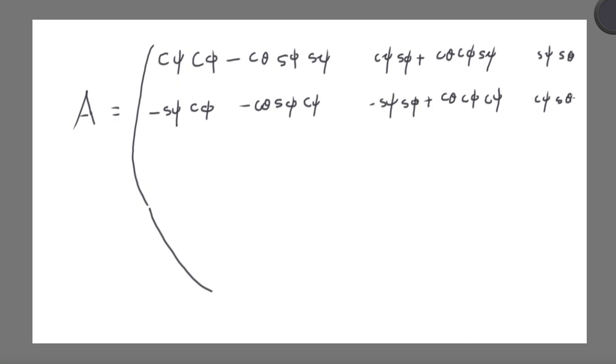Now a new entry here would be minus sine of psi, sine of phi plus cos of phi, cos of phi, and cos of psi. Then last entry here is cos of psi, sine of theta. Okay, final entry in this row, sine of theta, sine of phi, sine of phi, that is a phi, not a sine. Here would be minus sine of theta, cos of phi, and then you have a cos of theta.